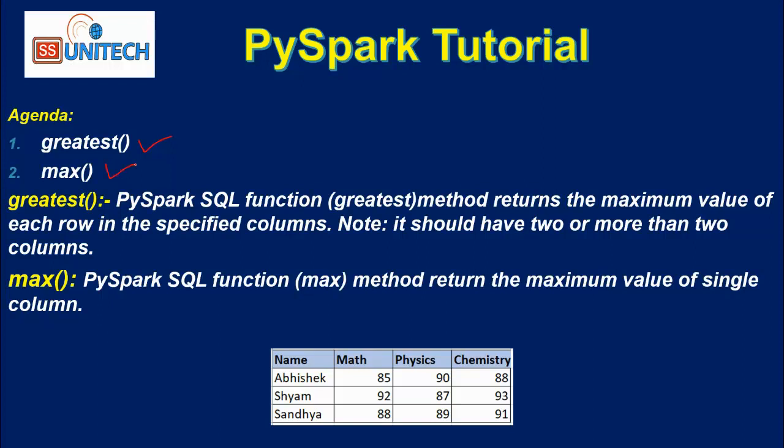What is the Greatest function? In PySpark SQL, the Greatest method returns the maximum value of each row in the specified columns. It should have at least two or more than two columns.